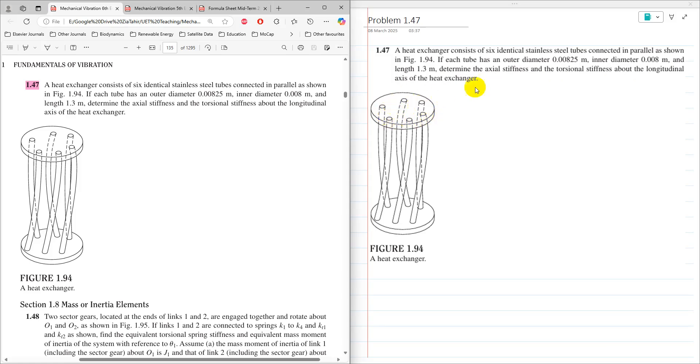There are 6 tubes connected and these are the dimensions of each tube. We need to find equivalent axial stiffness of 6 tubes and then equivalent torsional stiffness of 6 tubes. First we need to develop a relationship for axial stiffness and torsional stiffness.